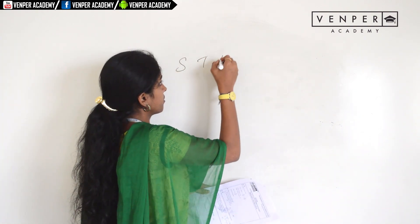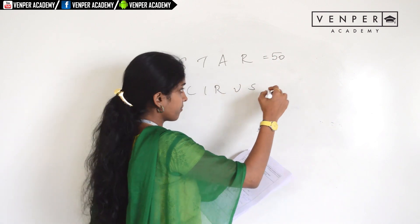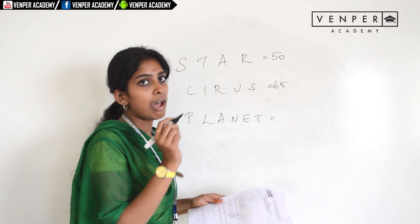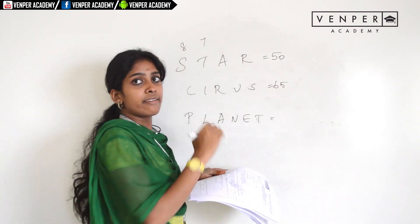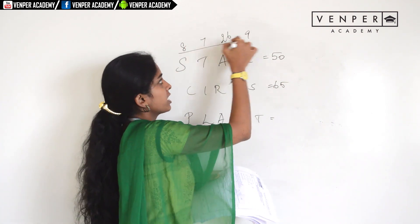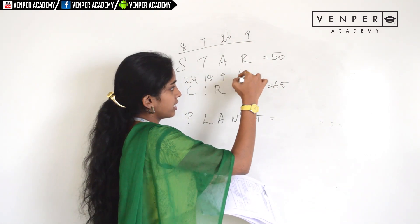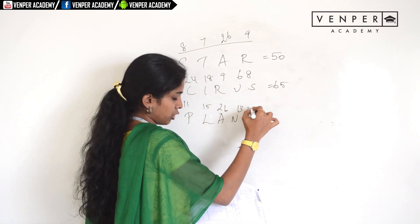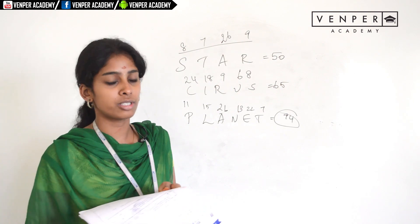Question forty-five: in a code language, STAR = 50 and CIRCUS = 65. The trick is to write the alphabets and number them by their reverse position. S=8, T=7, A=26, R=9 — together they sum to 50. For CIRCUS: C=24, I=18, R=9, C=6, U=8 — wait, they add to 65. For PLAN: P=11, L=15, A=26, N=13 — plus the reverse positions 22 and 7 — they add to 94. So the answer is the last option, 94.